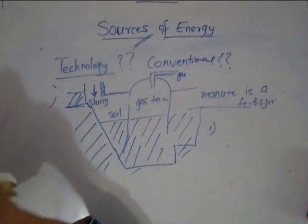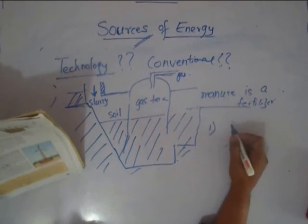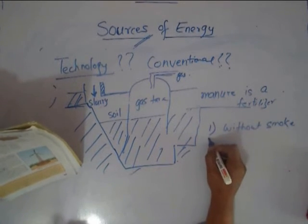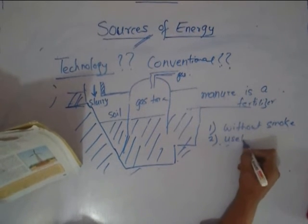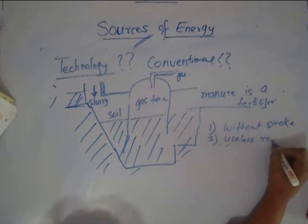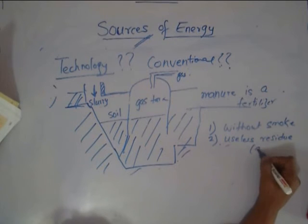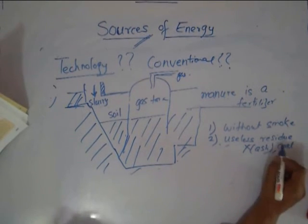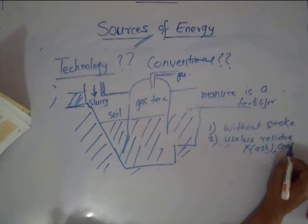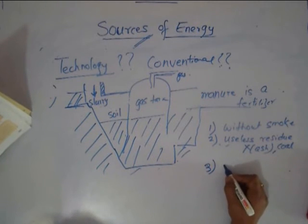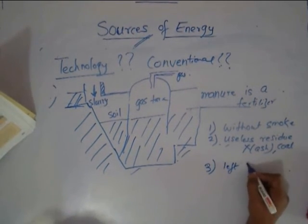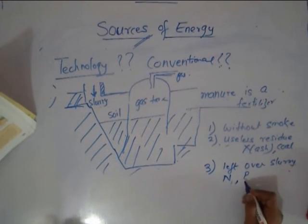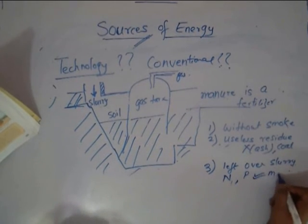Not only you get a clean, efficient source of energy, you also get the fertilizer. What are the advantages of this biogas? A high amount of methane is obtained, it burns without smoke. There is no smoke like the traditional chula. Then, there is no useless residue. The residue is not ash. What you have left behind is the leftover slurry. Leftover slurry is rich in nitrogen and phosphorus compounds and they are extremely nice as manure.